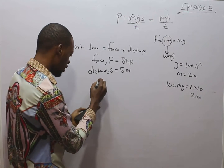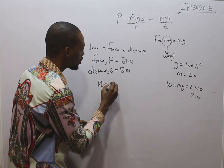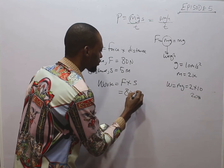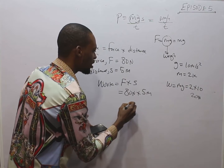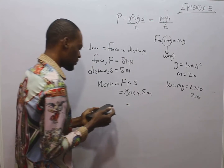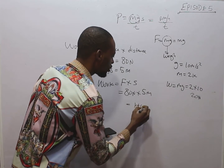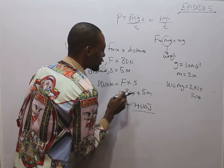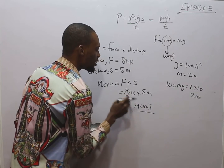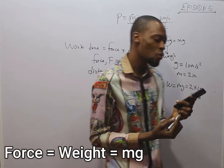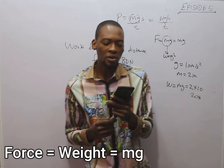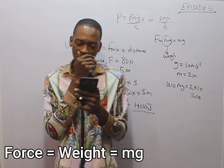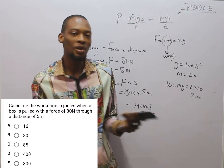Therefore, work done equals force times distance, equals 80 Newtons times 5 meters. Work done is in Joules. 5 times 0 is 0, 5 times 8 is 40 — so that gives you 400 Joules. 400 Joules is the work done when a bus is pulled with a force of 80 Newtons to a distance of 5 meters. So option D is the correct option.